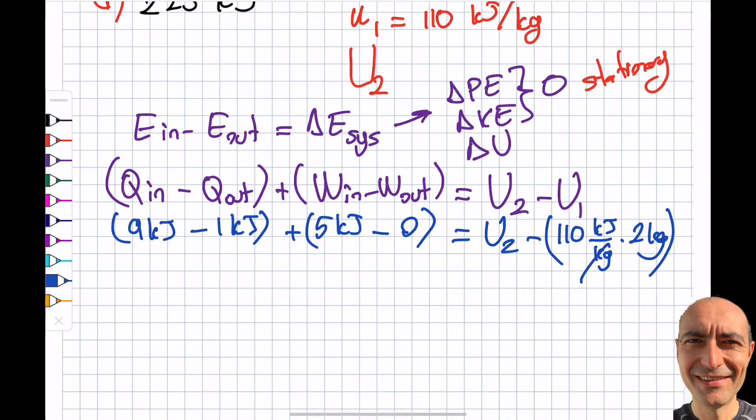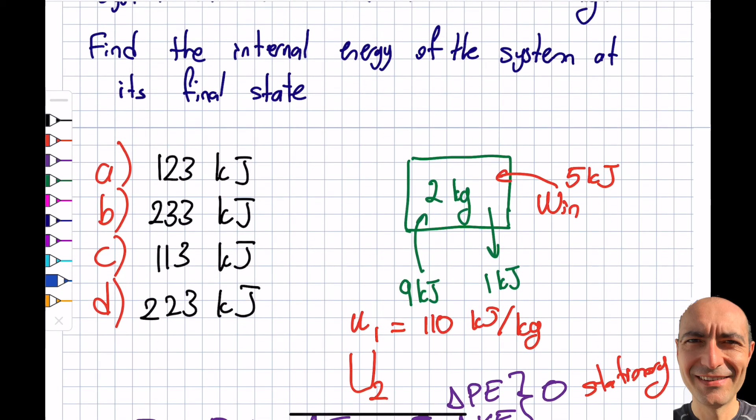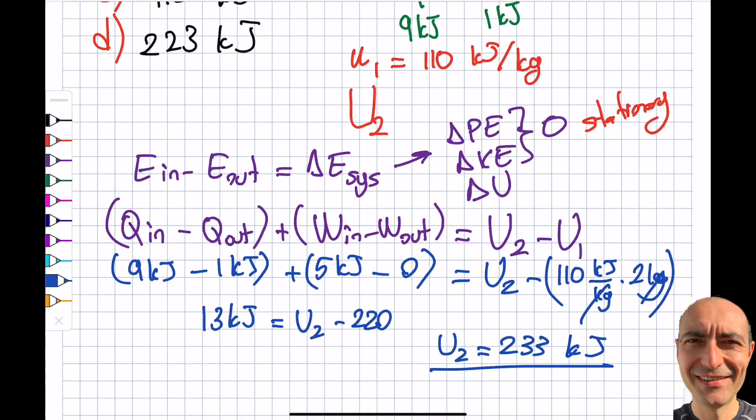You can clearly see the kilograms will cancel here and I will have homogeneity in my units. Then 8 plus 5 is 13 kilojoules, which will be equal to U2 minus 220. If I rewrite this, I'll get my U2 to be 233 kilojoules. The question is asking me in terms of kilojoules, so that will be your answer: 233 kilojoules.